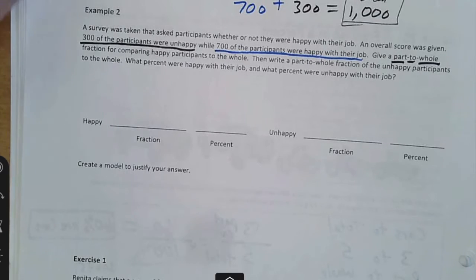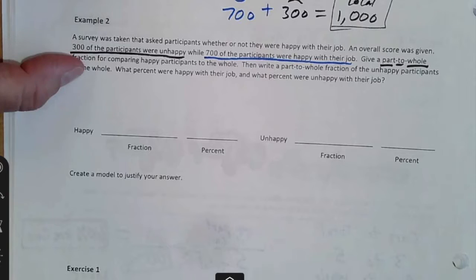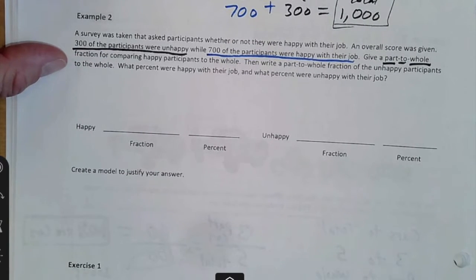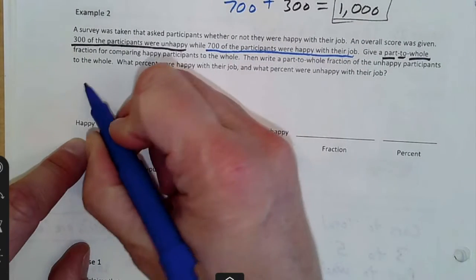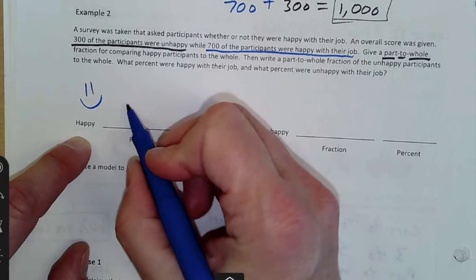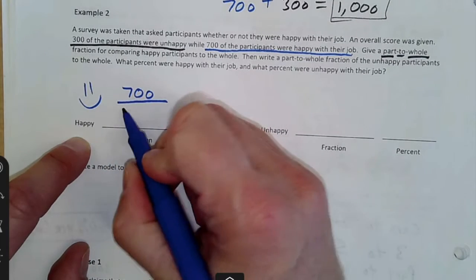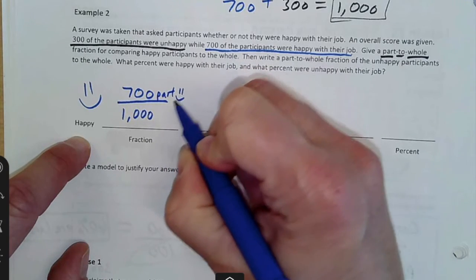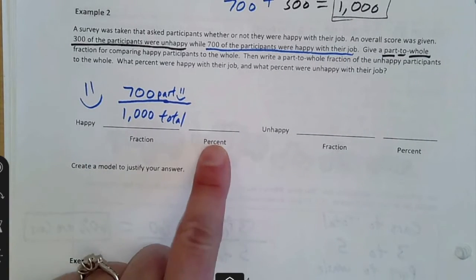A part to whole fraction for comparing happy participants to the whole and then write the part to whole fraction for unhappy participants and what percent were unhappy with their job. So let's kind of go with the happy people first. So happy, what was it? 700 were happy. So the fraction is 700 out of how many total? 1,000. So I like to label it 700 was the part that was happy out of the 1,000 that would be like the total amount of people.